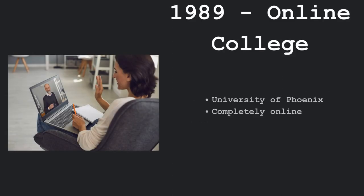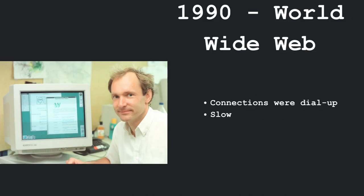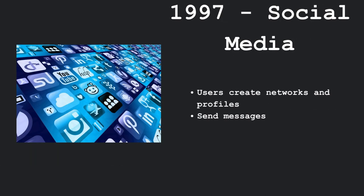In 1989, online college came about when the University of Phoenix was the first institution to provide bachelor's and master's degrees completely online. In 1990, the World Wide Web was invented and connections were dialed up and it was slow due to not being able to handle video and having to use the telephone connection. In 1997, social media was invented and it allowed users to create networks and profiles and send messages to other users.